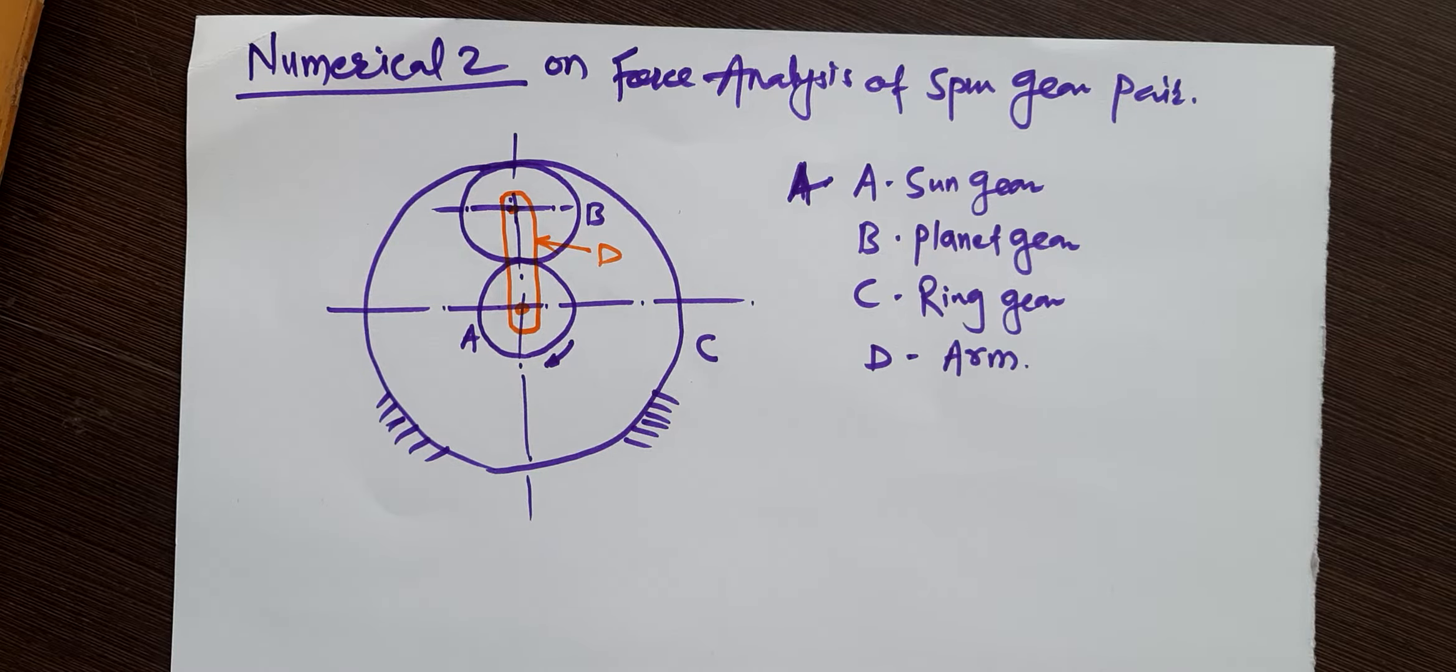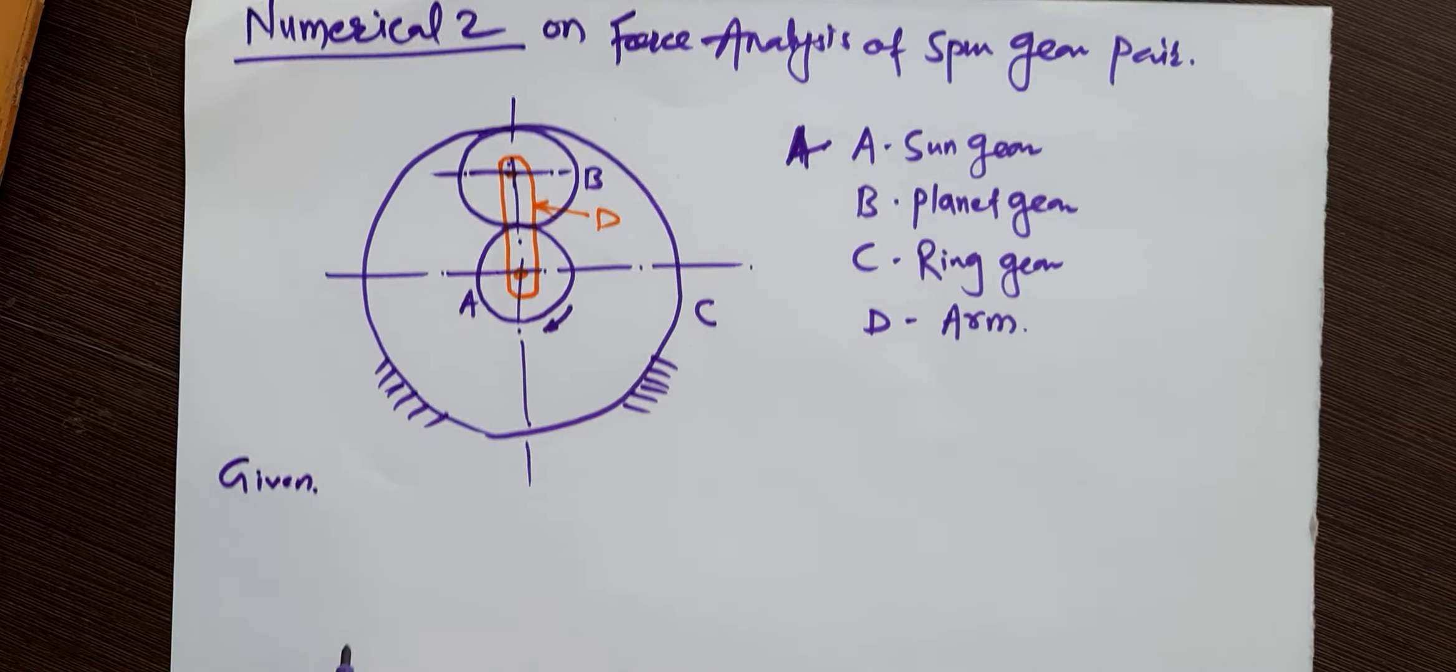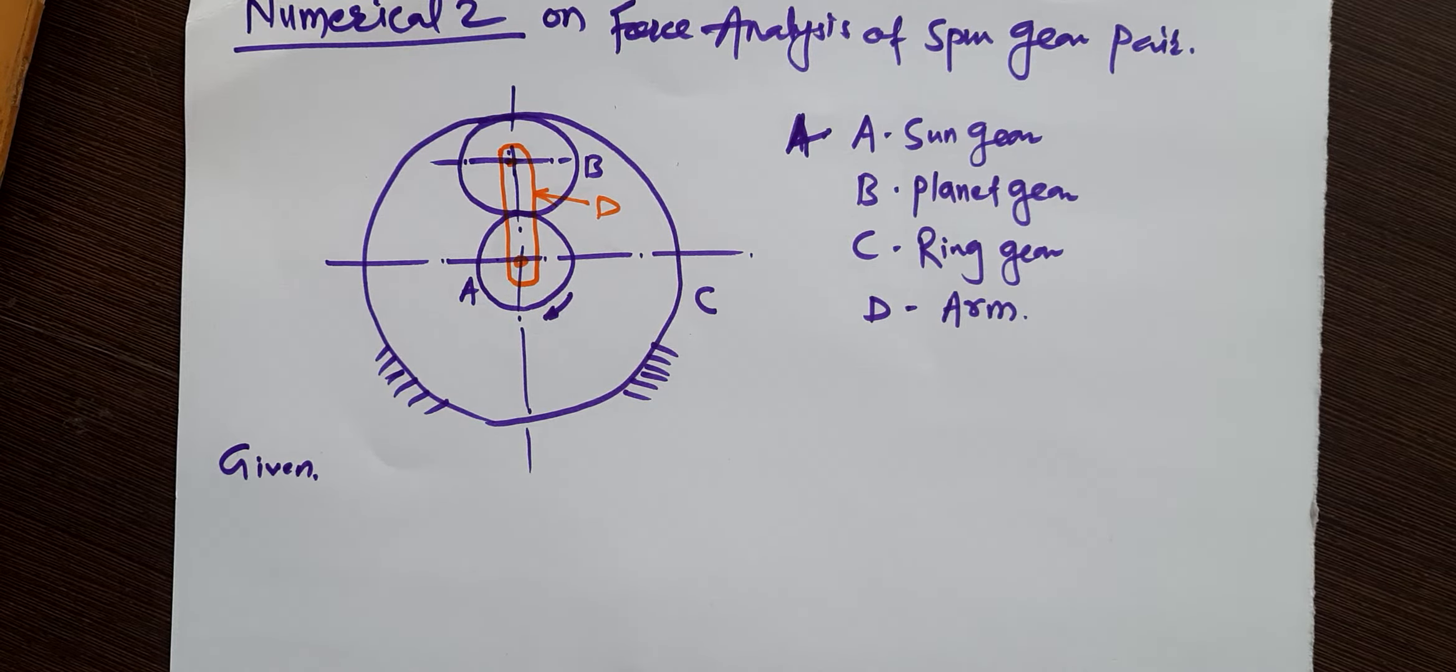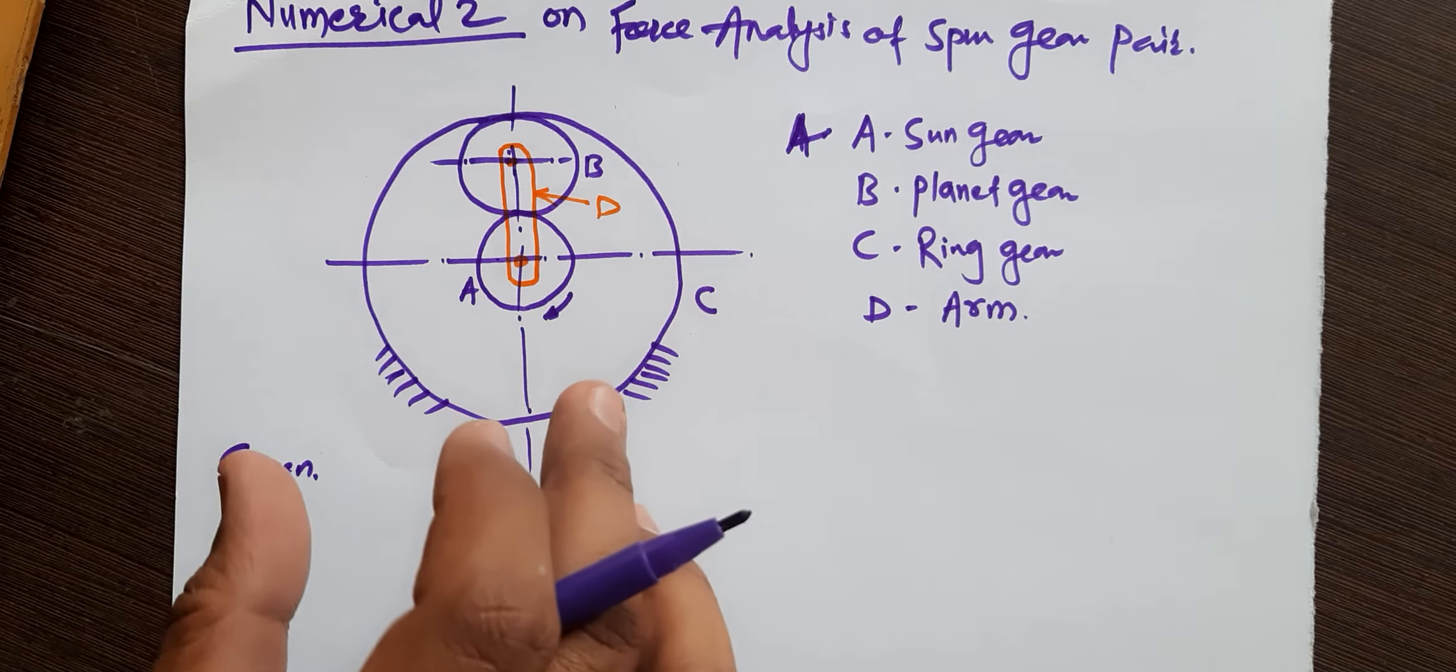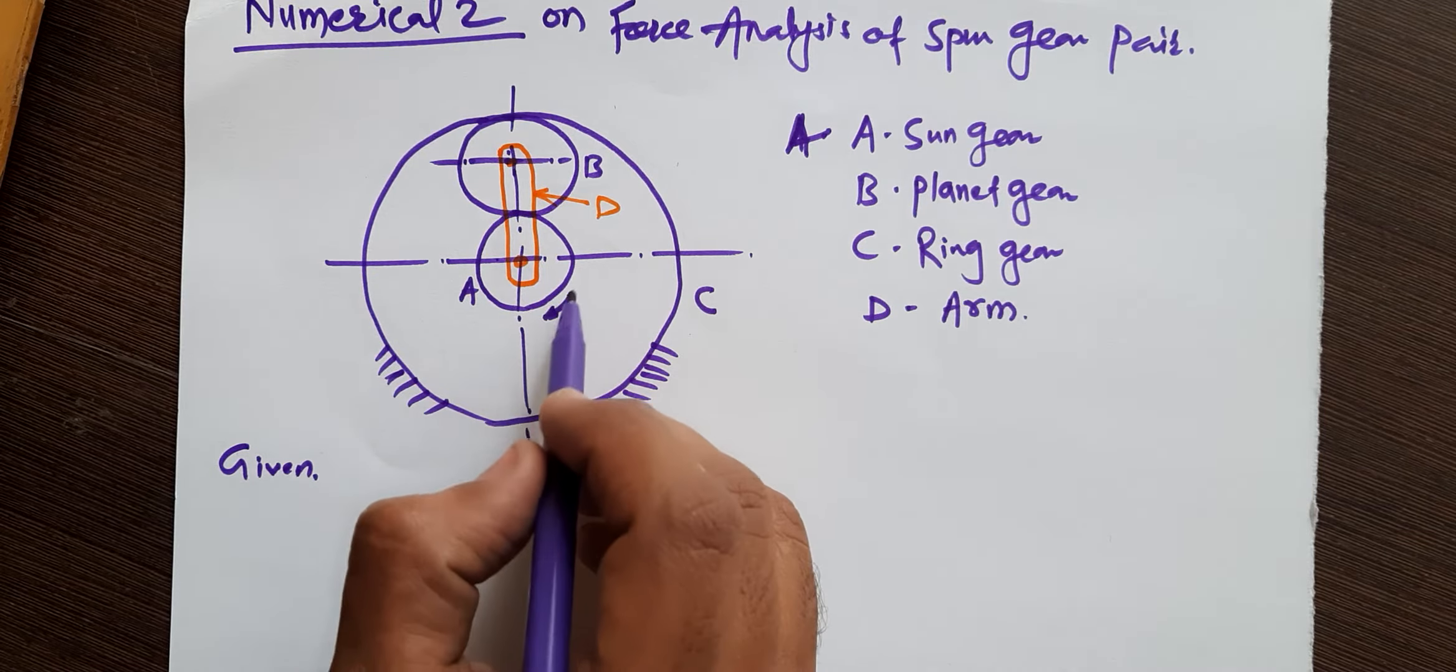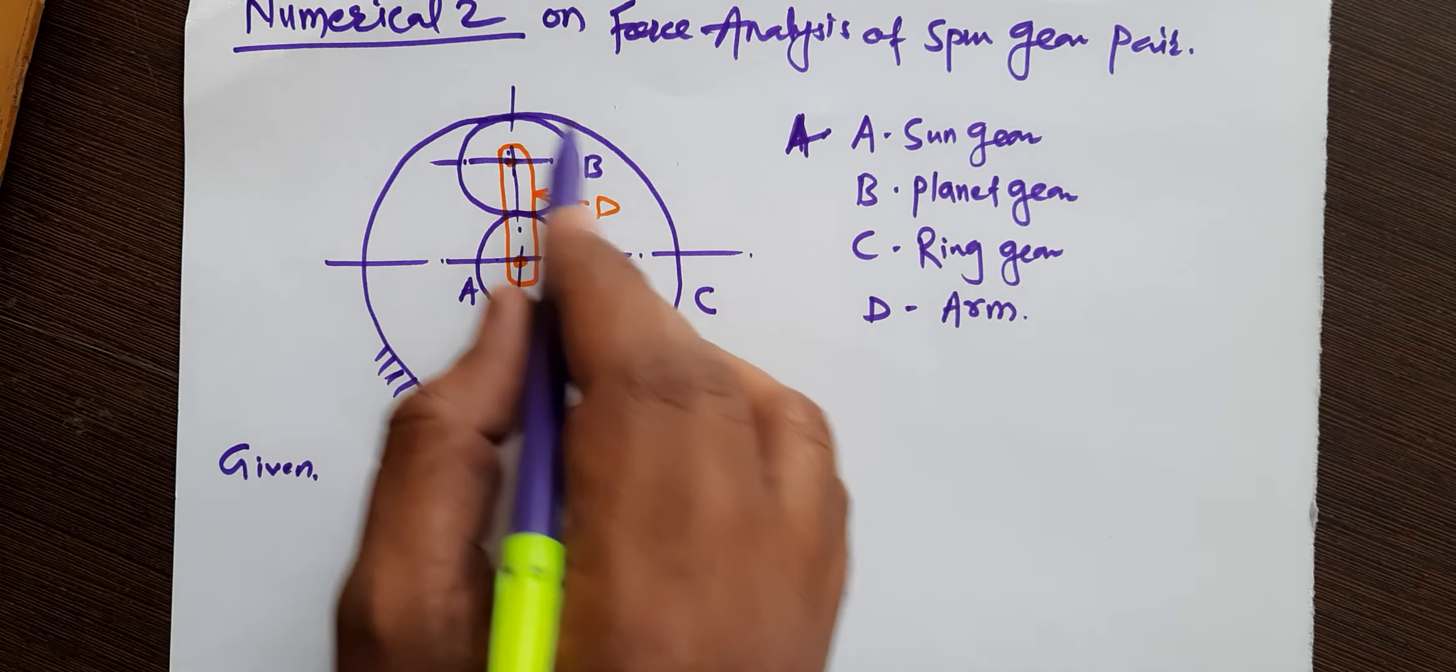A planetary gear train is shown in the figure. The Sun gear A rotates in clockwise direction. The planetary gear train has the Sun gear which rotates - gear A is the Sun gear, B is the planet gear, C is a ring gear which is fixed, and D is the arm.